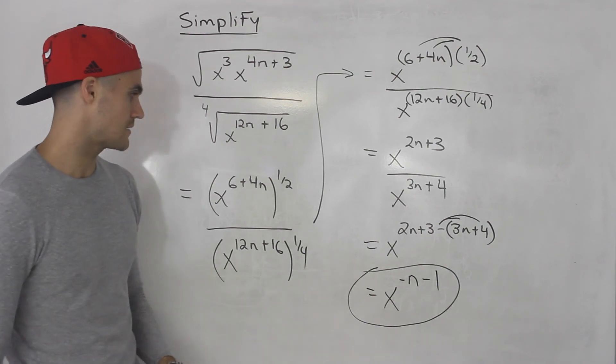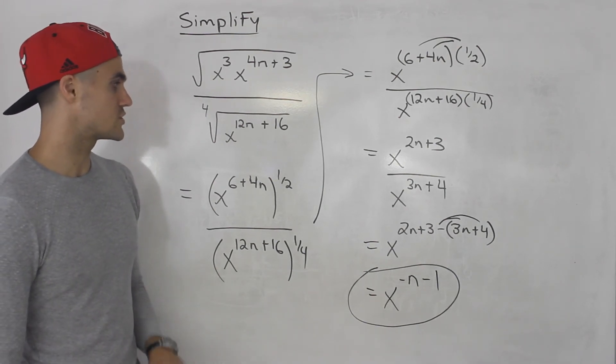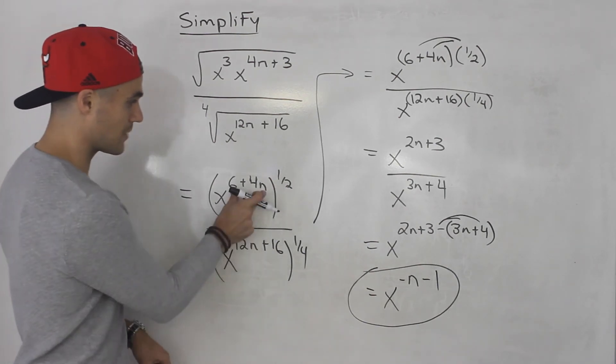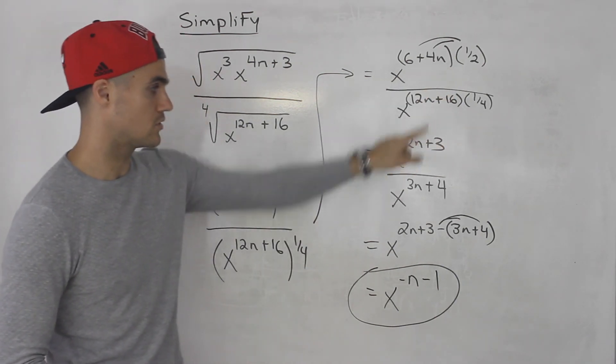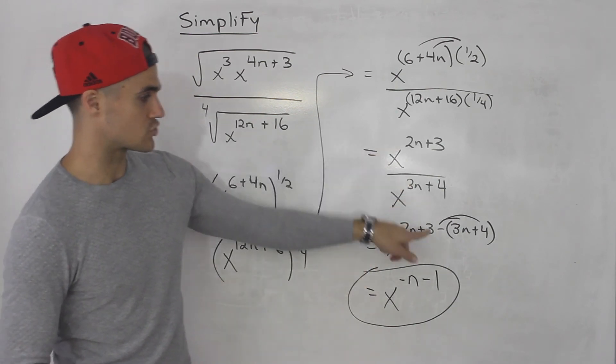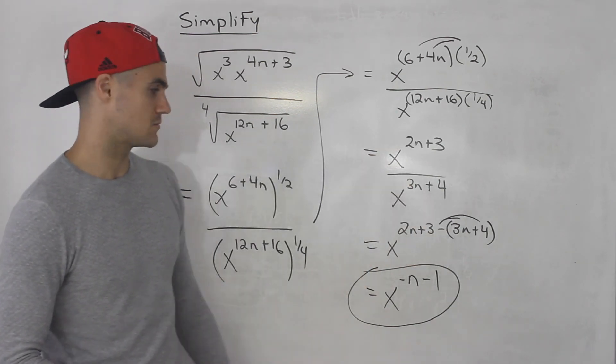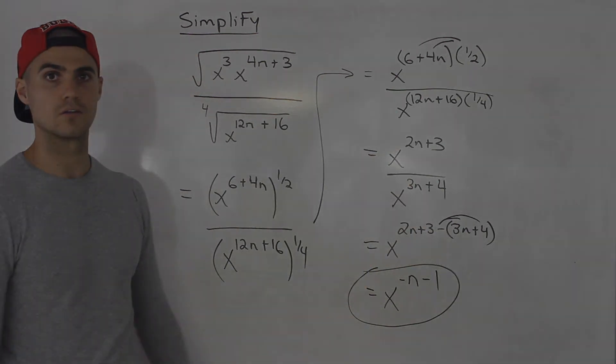So a lot of tricky steps. Just got to be careful with the distributing. This 1 half, we multiply by that whole expression. Distribute inside the bracket. That 1 over 4, distribute. And then over here, when we're subtracting that negative 1, distribute. And you end up with that final answer.